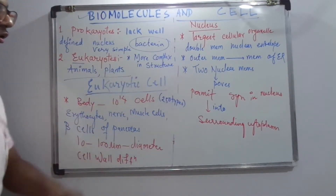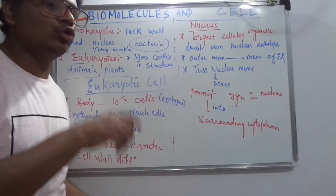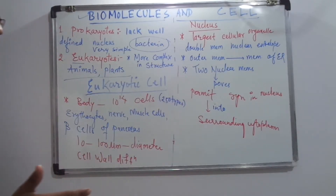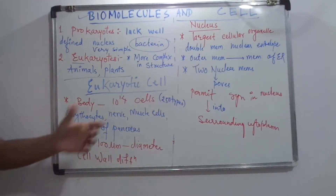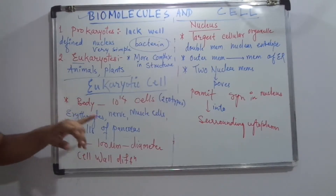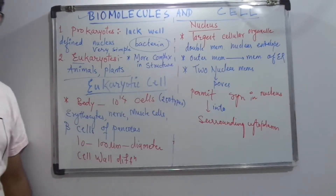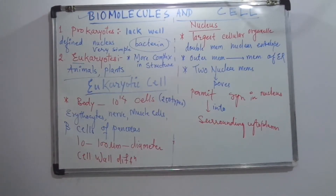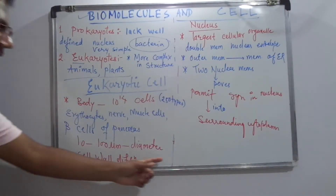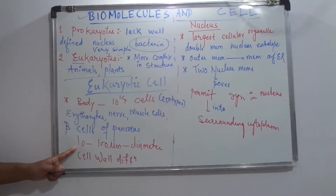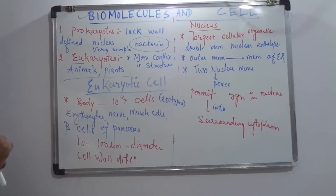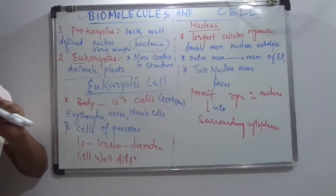The eukaryotic cell body is made up of 10 to the power of 14 cells and has 250 specialized types. Some specialized eukaryotic cell types include erythrocytes, nerve cells, muscle cells, and beta cells of the pancreas, which secrete insulin. Alpha cells secrete glucagon. The diameter of a eukaryotic cell is 10 to 100 micrometers, while a prokaryotic cell is only 1 to 10 micrometers in diameter.